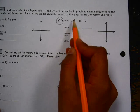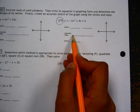Number 27, we're going to find the roots of the parabola, find graphing form, and the vertex.